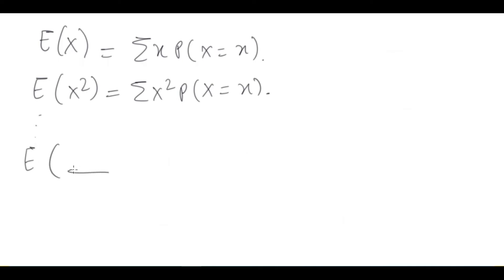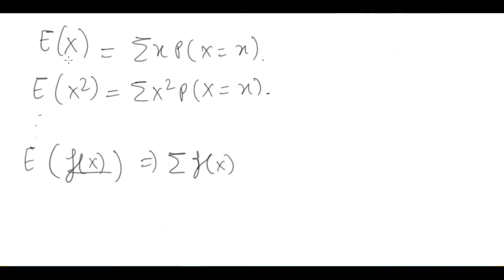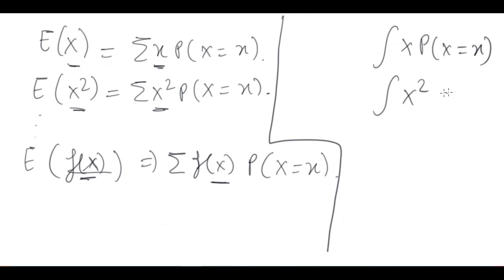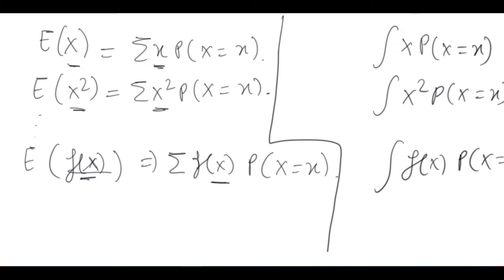We use the formula for the continuous case as well. It means that we multiply f(x) — the PDF — by x and integrate. If x is multiplied by f(x), the random variable is treated accordingly. Now we will put the formula in the continuous stage: if we take the expectation of f(x) and x is a continuous random variable, we take the integral of x times the PDF.